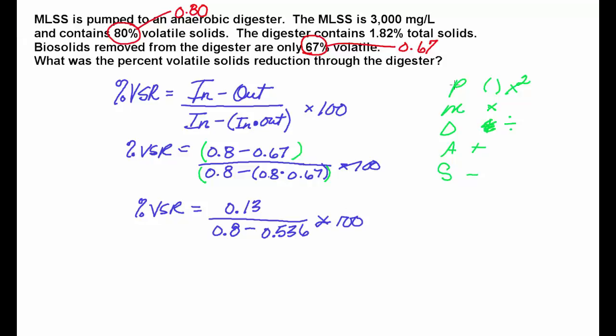We've still got the hidden parentheses down here on the bottom, so that's the next thing that we have to do. And so percent volatile solids reduction ends up being 0.13 on the top, and then the bottom is 0.264. That's a 4 times 100.